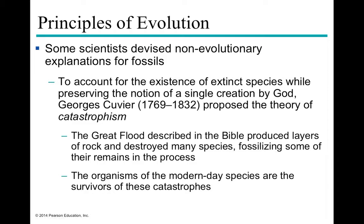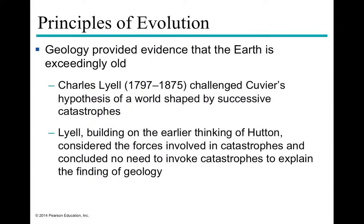At this time, the church was funding much of the science, creating tension with emerging evolutionary ideas. George Cuvier, born in 1769, proposed catastrophism — the idea that successive major catastrophes (like the Great Flood depicted in the Bible, or the meteor that led to dinosaur extinction) drove species change. Modern organisms are survivors of these catastrophes. However, catastrophism only shows major snapshots; more subtle, ongoing selective pressures from the natural environment also play a critical role.